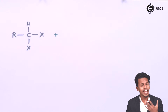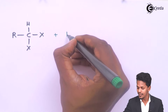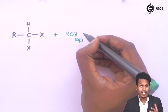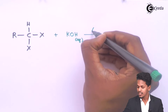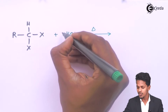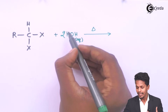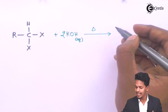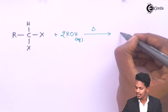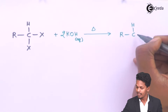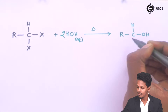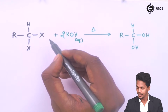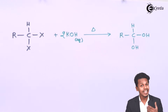We carry out hydrolysis using dilute KOH, which is basic in nature. Two moles of KOH are utilized to replace the halogen atoms with OH groups. The product obtained is RCH(OH)₂, and the byproduct is two moles of KX.